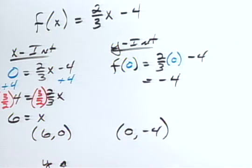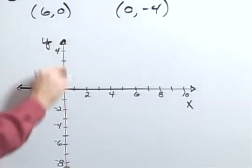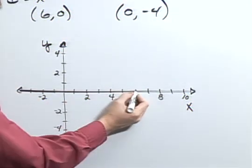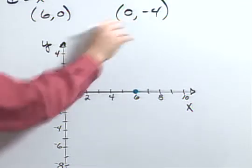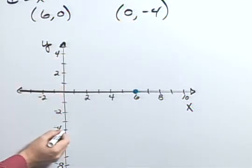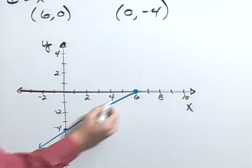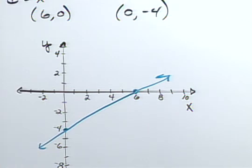Now that I have my x-intercept and my y-intercept, I'm ready to graph. So I can make my points at six, zero, my x-intercept, and my y-intercept at zero, negative four, and then connect those two intercepts. And that gives the graph of my function.